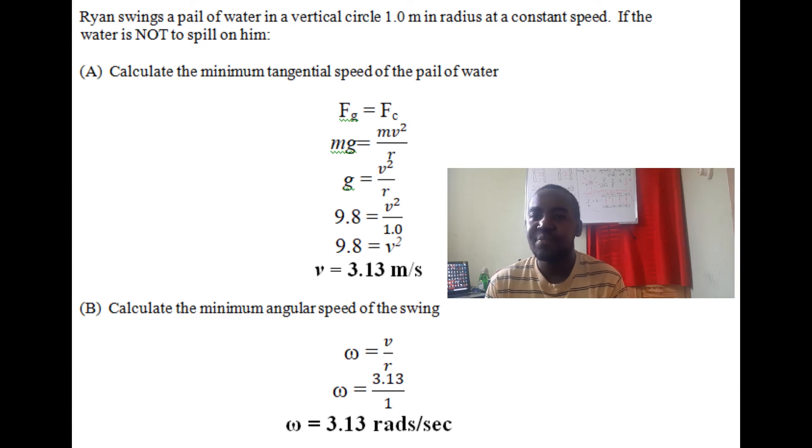Part B: Calculate the minimum angular speed of the swing. Now that we have the linear speed, we can find ω, which is our angular speed. We know ω = v/r, so v is 3.13 and r is 1, therefore ω is 3.13 rad/s.